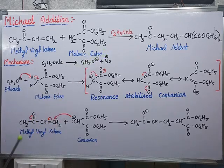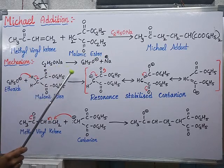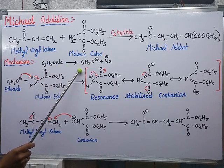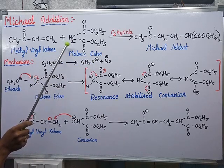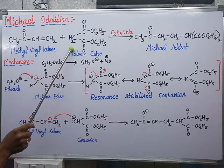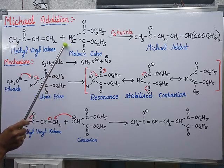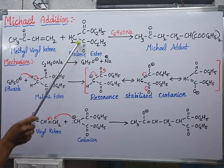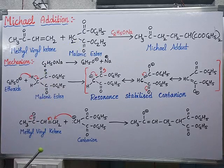Now let us see the mechanism of the reaction. First, sodium ethoxide breaks into ethoxide ion and sodium ion. This ethoxide ion then abstracts a proton from the malonic ester. Since it is an active methylene compound, it readily gives out H⁺ ions because both carbonyl groups are electron-withdrawing.